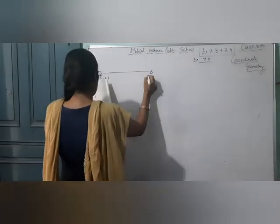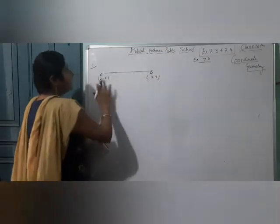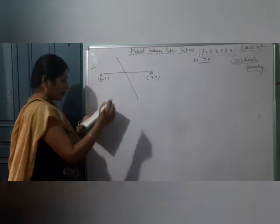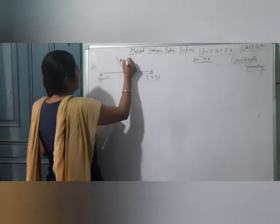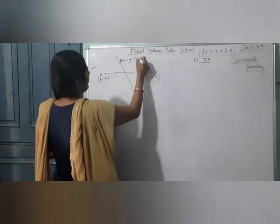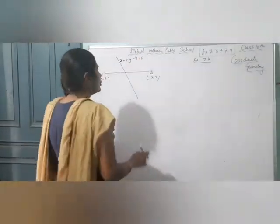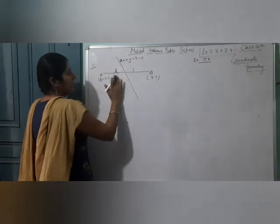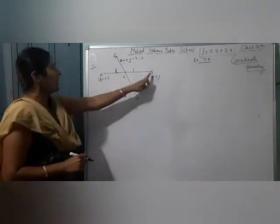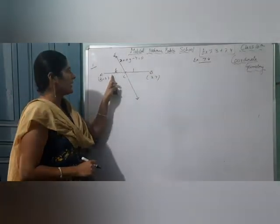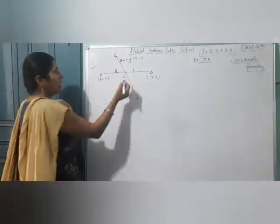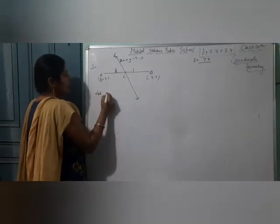Exercise 7.4, Question 1: A and B are points (2, -2) and (3, 7). Line segment AB is intersected by the line 2x + y - 4 = 0. We have to find in what ratio this line divides AB. Let point C divide AB in ratio k:1.